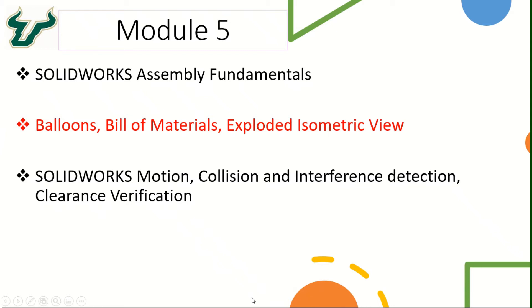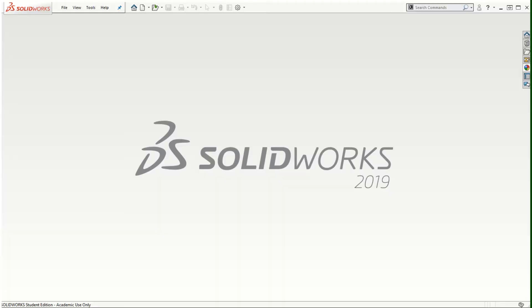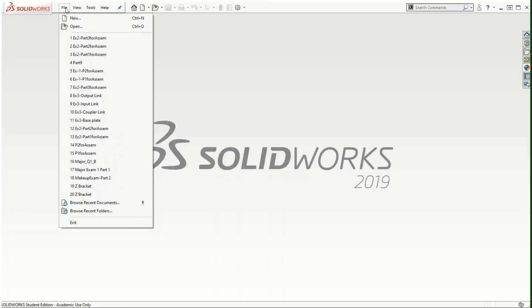Let's take a look at how to create the exploded isometric view of an assembly drawing and also learn how to create the bill of materials and the balloons. It is very important to create the exploded isometric view of the assembly in the drawing so that all the parts can be identified and tabulated using the bill of materials, which we can customize to include the type of material, the number of quantities for each component, and also indicate them using the balloons. So let's get to SOLIDWORKS and start with one example.